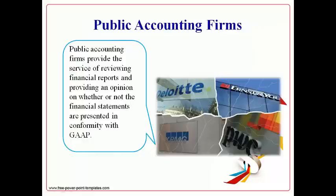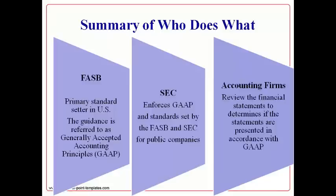Public accounting firms provide the service of reviewing financial reports to ensure that companies are following Generally Accepted Accounting Principles. They provide an opinion that states whether or not the financial statements are presented in accordance with GAAP, which gives investors confidence in the information provided. The FASB makes the rules and provides guidance on how accountants will prepare financial information. The SEC enforces the rules for all public companies, and public accounting firms review the financial statements to ensure the information is in accordance with GAAP.